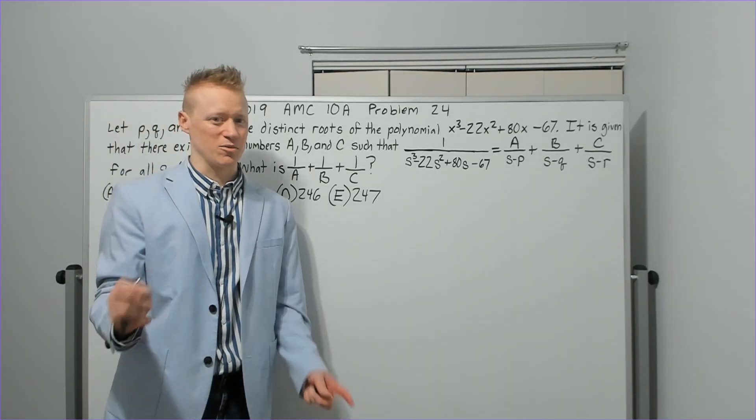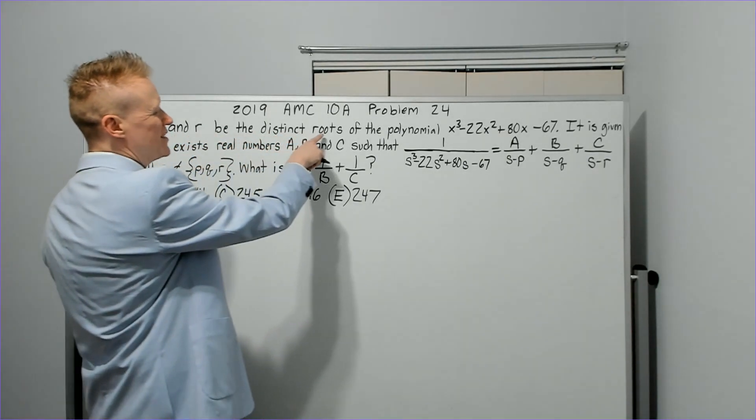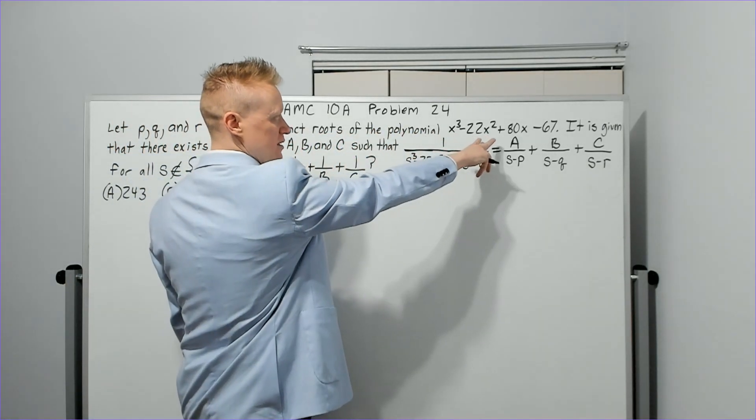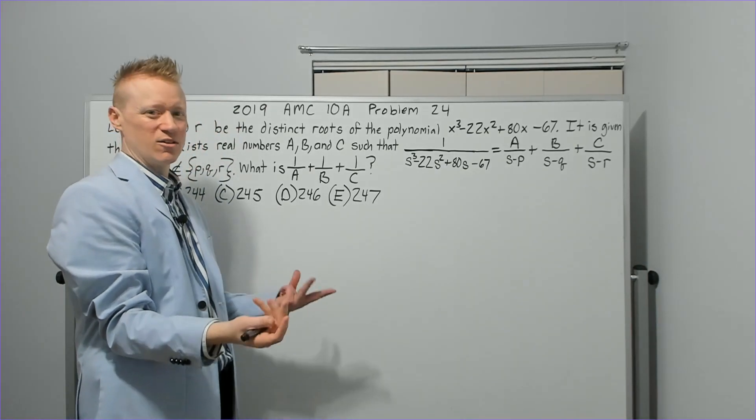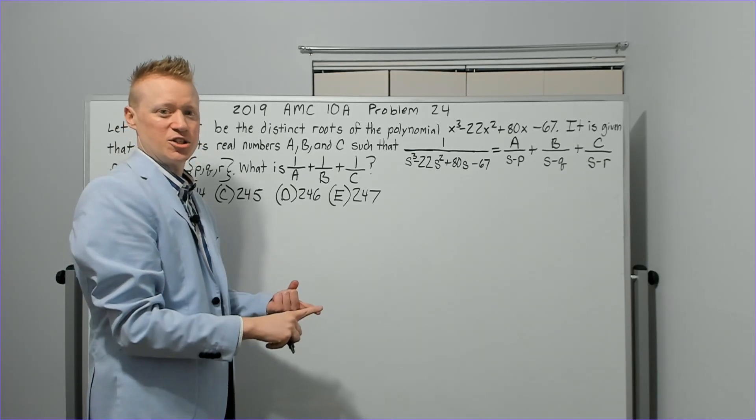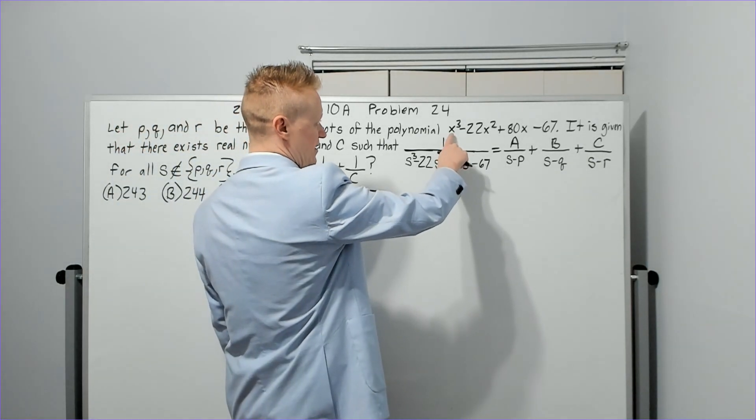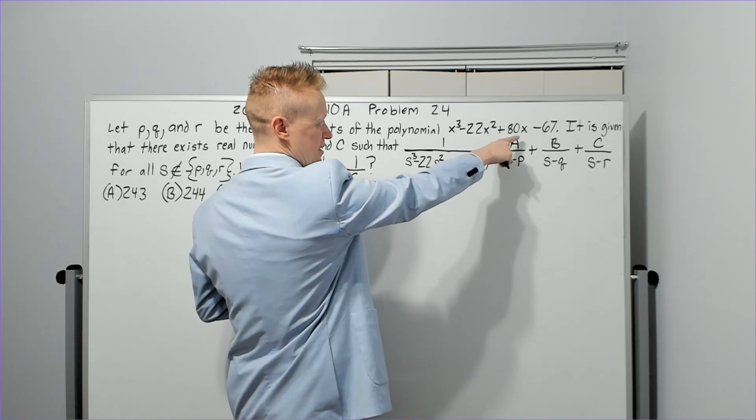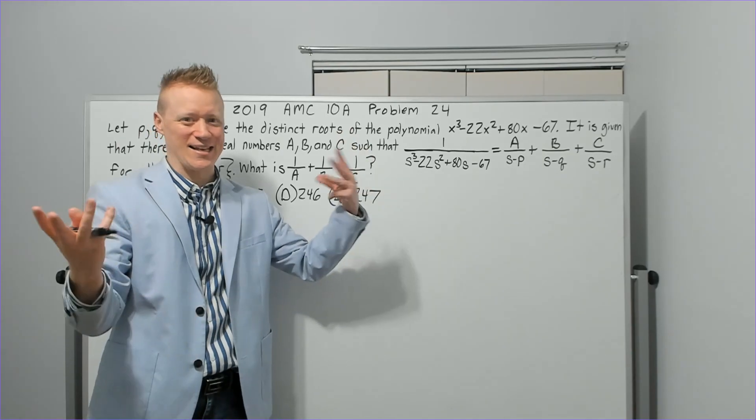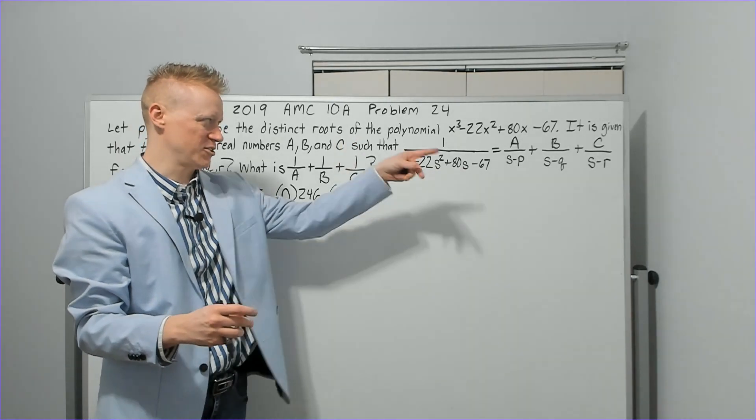Get ready to pause the video to write things down if you're preparing for the competition. Let P, Q, and R be the distinct, I mean different, roots of the polynomial here. Now, notice it doesn't say equals zero because they don't need to. A root is an x-intercept, a solution to f of x equals zero. So it's x cubed minus 22x squared plus 80x minus 67. When you see that during the test, you're not going to process that in any meaningful way. Polynomial roots, got it. Don't try to read it like I just did. Just gloss over it and keep reading.